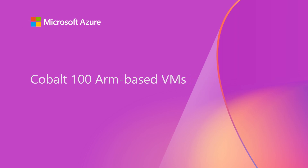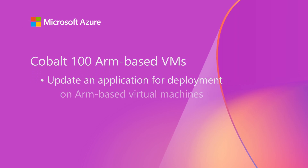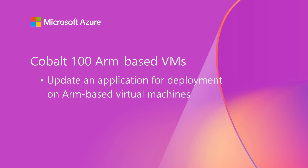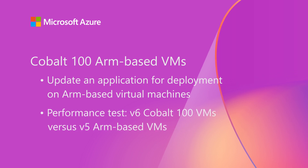In this video, I'll demonstrate how to update an existing microservices application built around React and Node.js for ARM64-based virtual machines. Then, I'll show how our newest ARM-based version 6 SKU using our Cobalt 100 processor improves performance compared to our previous version 5 SKU in a side-by-side test.